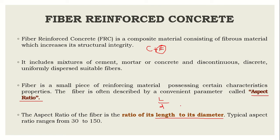Many studies around the world explore the influence of aspect ratio on the properties of concrete. Aspect ratio is length divided by diameter: length is generally in mm and diameter in micrometers, so you convert and divide to get the aspect ratio. Generally, fibers fall in the aspect ratio range of 30 to 150, though it may vary depending on the type of fiber and its dimensions.